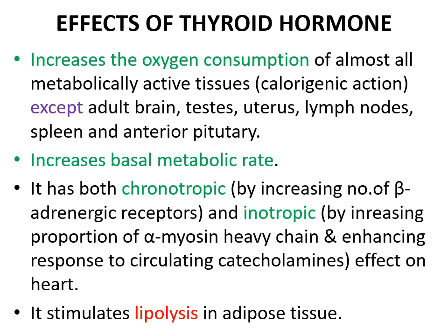Thyroid hormone has both chronotropic and inotropic effects on the heart. T3 enters the myocyte, combines with its receptors, and enters the nucleus where it promotes the expression of some genes and inhibits the expression of others.